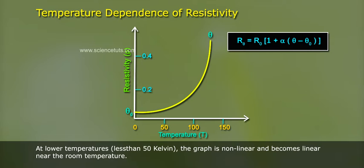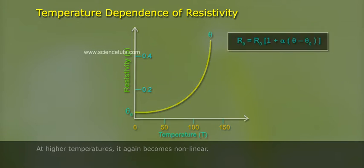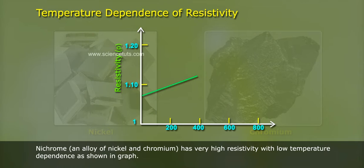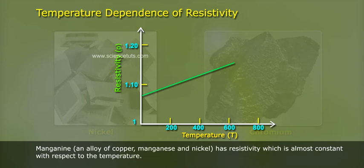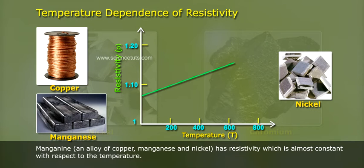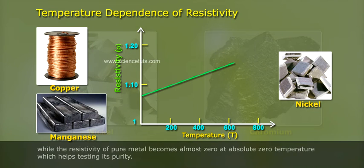Nichrome, an alloy of nickel and chromium, has very high resistivity with low temperature dependence as shown in graph. Manganin, an alloy of copper, manganese and nickel, has resistivity which is almost constant with respect to temperature. The resistivity of Nichrome does not become zero even at absolute zero temperature, while the resistivity of pure metal becomes almost zero at absolute zero temperature, which helps testing its purity.